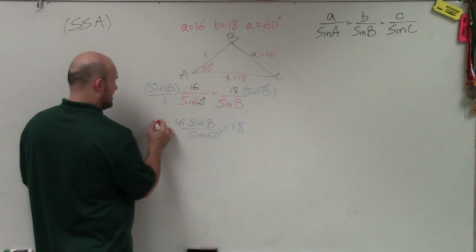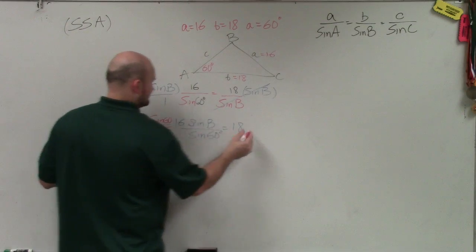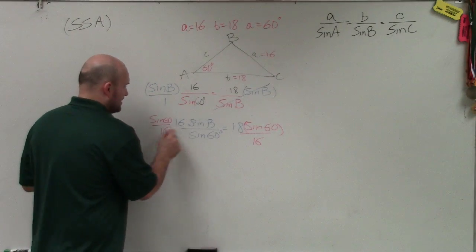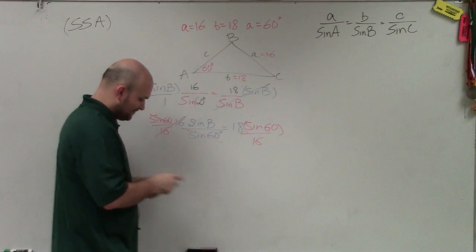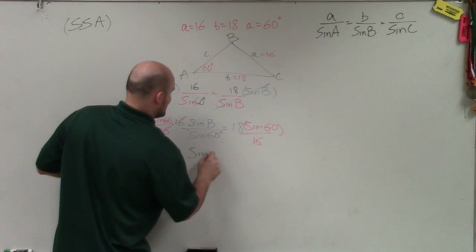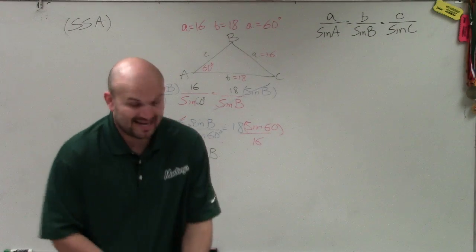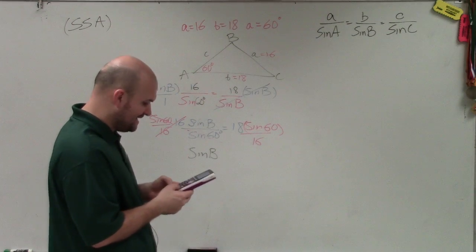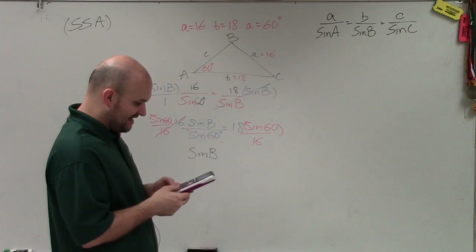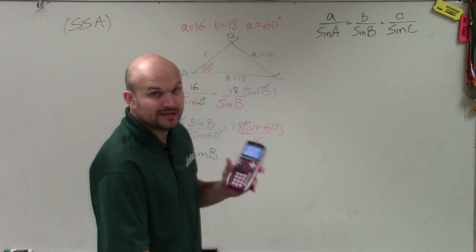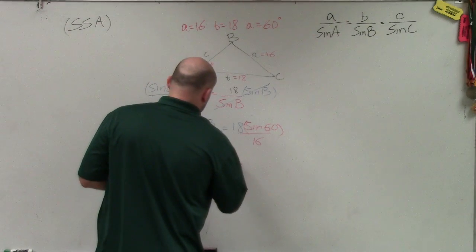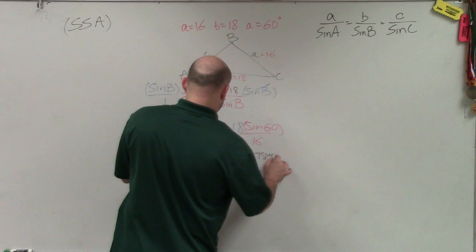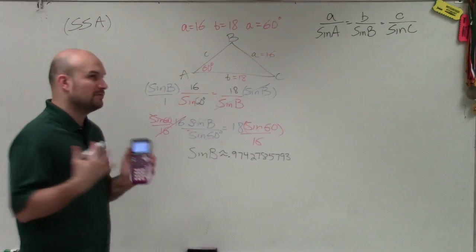I'm going to multiply by sine of 60 over 16 to isolate sine of B. So sine of B is going to equal whatever 18 times sine of 60 divided by 16 is. I just go to my calculator — make sure your calculator is in degree mode. I'll do 18 times sine of 60 and then divide by 16. You're going to want to keep this full value in your calculator because you never want to round until the very end.